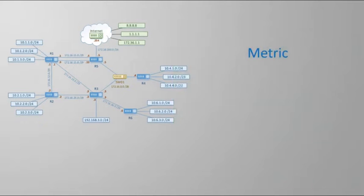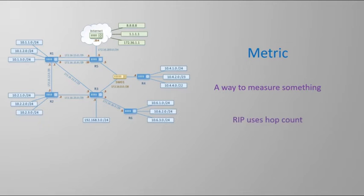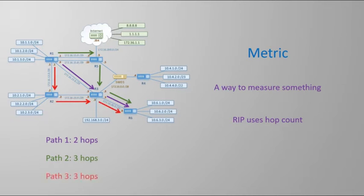A metric is simply a way to measure something. A distance vector routing protocol uses a metric to measure the distance from the local router to the destination network. RIP uses hop count as its metric. For example, from R1 the network 10.6.1.0 is two hops away using one path, three hops away using another, and three hops using a third path. R1 will learn about the 10.6.1.0 network from R5, R3, and R2. It won't build a full map — it just uses these as signposts. It looks at the hop count and finds that one path is shorter than the rest.